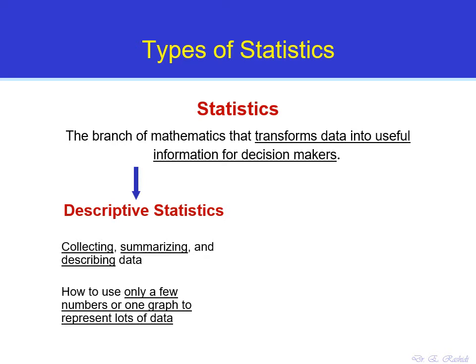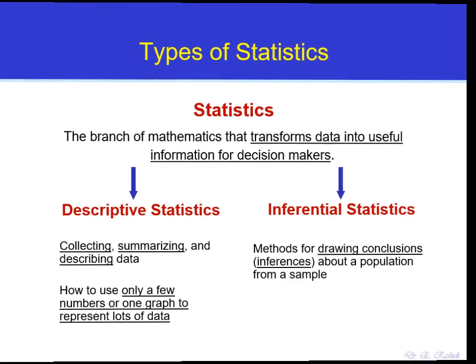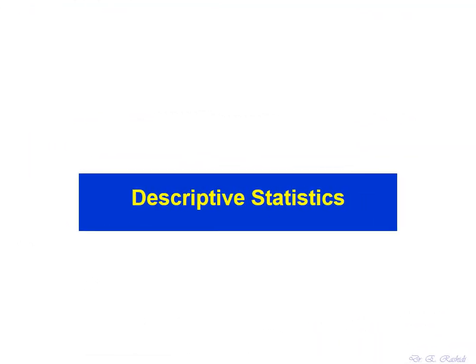For example, we can use graphs or measures such as central tendency measures — the average, for example — to describe the whole data. The next type, which is more advanced and important, is called inferential statistics. That includes methods for drawing conclusions or inferences about the whole population and its parameters based on a sample.